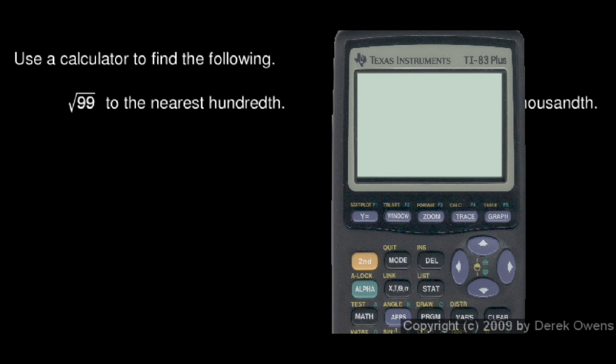So we'll pull out a calculator, and different calculators work different ways, but this one you just hit the second and then the square key, and that's the square root function, and you just type in square root of 99.